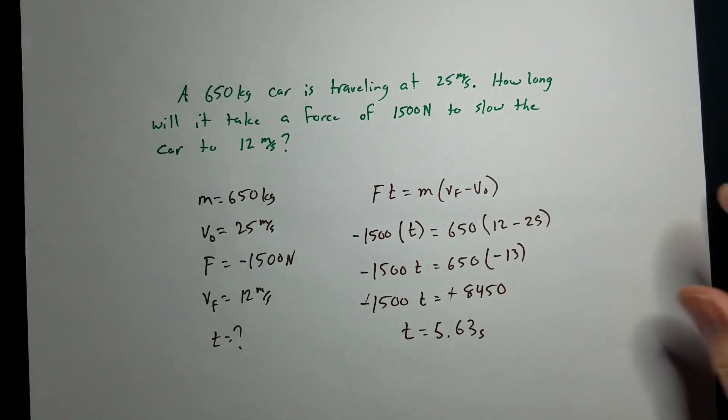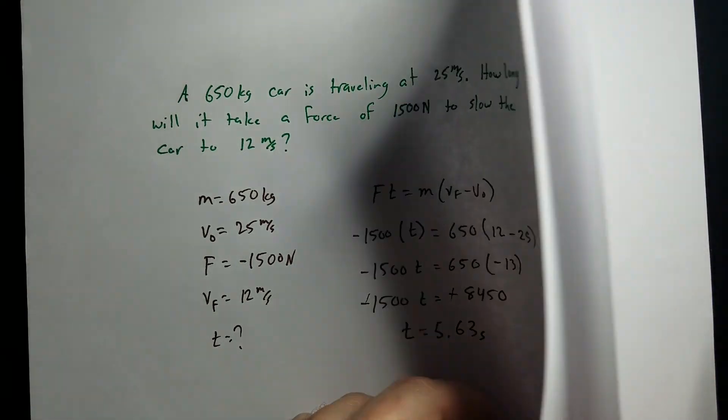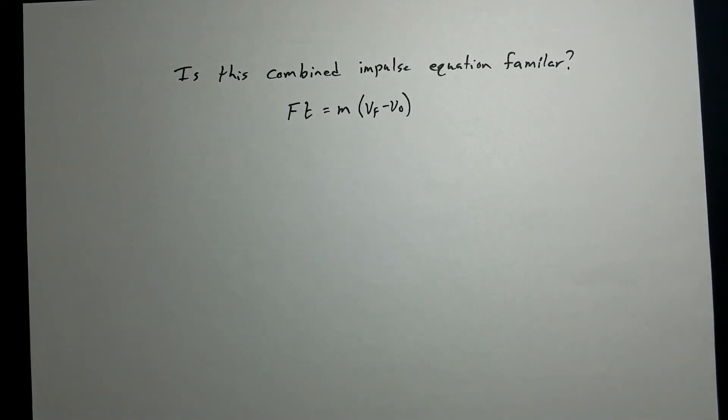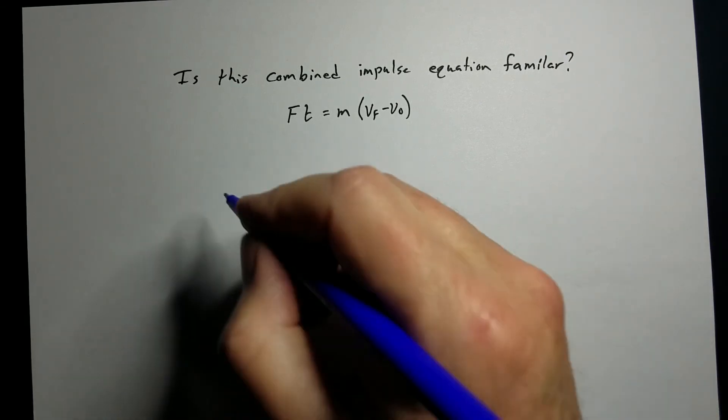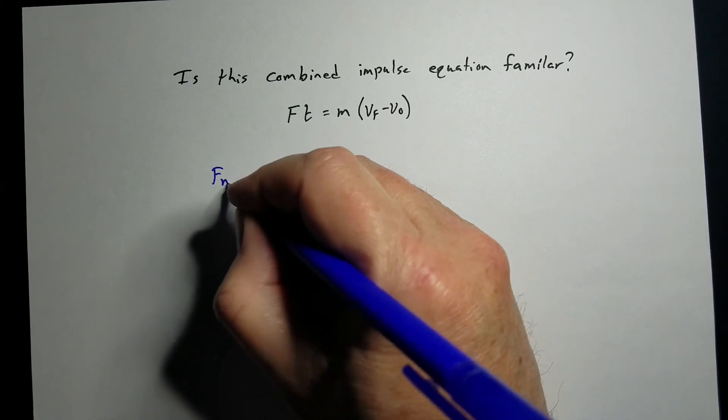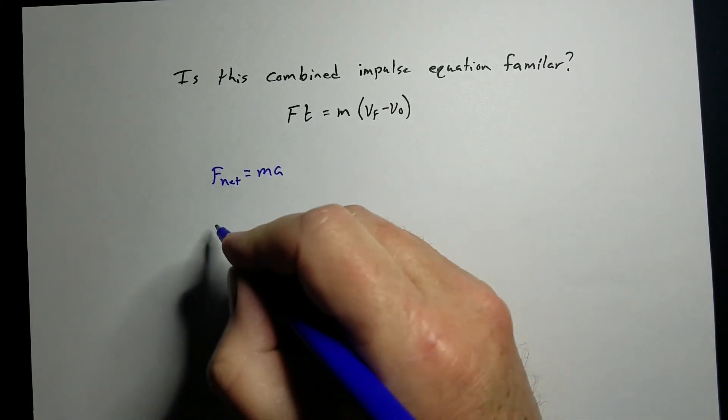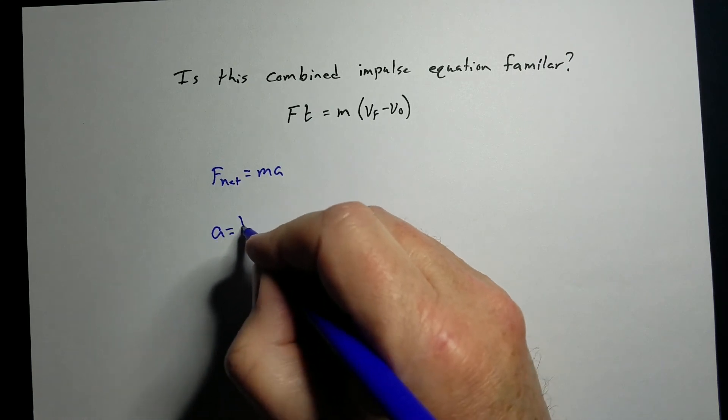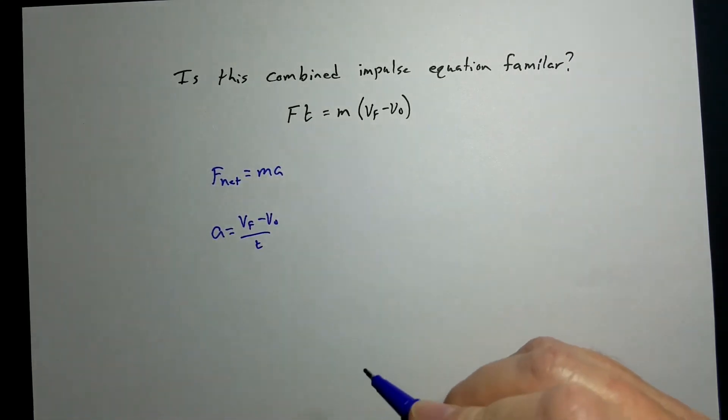This will be the time required for that force to slow this car from that speed down to this one. So, this equation. Does it look familiar? Well, if we look at it in that form, maybe not. But, let's go back and look at some of the stuff we've done before. We've talked about Newton's second law. Fnet equals MA. And before that, we talked about acceleration, where acceleration is final velocity minus original velocity over time.